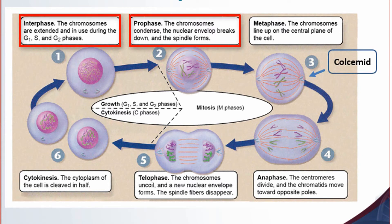This is the prophase, where the chromosomes are starting to condense. The chromosomes are beginning to form — the DNA is starting to condense with all the proteins, which form the chromosomes. So they are highly organized, packaged genetic material.